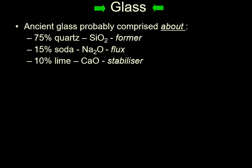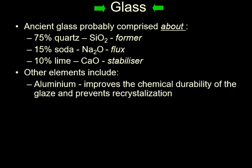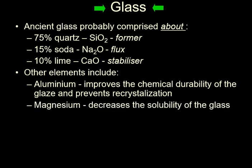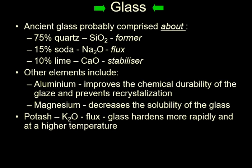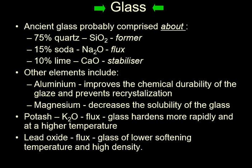There is also a stabilizer. About 10% of this could be calcium oxide lime, and that's a stabilizer. So, that's a typical glass. Other elements you might get include aluminium, which supposedly improves the chemical durability of the glaze and prevents recrystallization. Magnesium decreases the solubility of the glass. Potash is another flux, and so you may sometimes get potassium, potash glass rather than soda glass — and this hardens more rapidly and at a higher temperature. Lead oxide is also a flux, so you can have lead glass. This creates a glass of a lower softening temperature and quite a high density — it's very heavy.